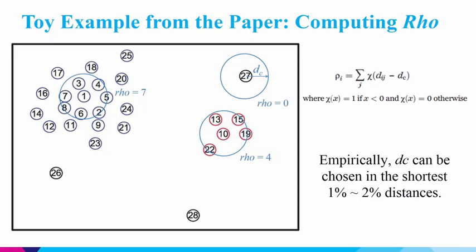For node 10, we draw a circle with radius DC and count nodes within it — finding 4 nodes, so the local density of node 10 is 4. For node 1, we find 7 nodes within the circle, so the local density is 7. Using the same method, you can compute rho for every node on the graph.